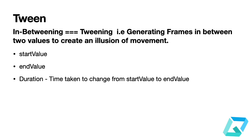The three key values in tweening are: start value, end value, and duration. Suppose I have a ball with a start value of 0 and an end value of 1, representing height. I go from start to end over some duration — say one second or 200 milliseconds. In Flutter, the tween won't jump from 0 to 1 instantly; it will go through 0.001, 0.002, and so on until it reaches 1 in one second.